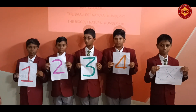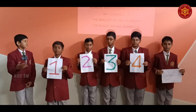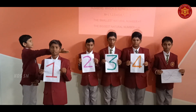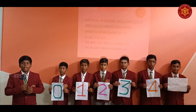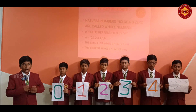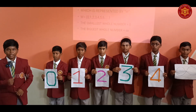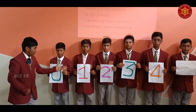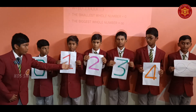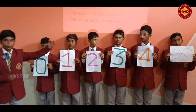The smallest natural number is one. The greatest natural number is infinity. My name is Vansh. I am from seventh Google. The natural numbers including zero are called whole numbers, which is represented by capital W. The examples of whole numbers are zero, one, two, three, four, and so on up to infinity.